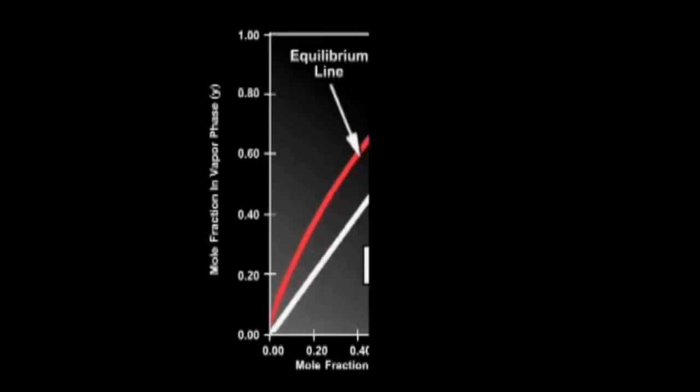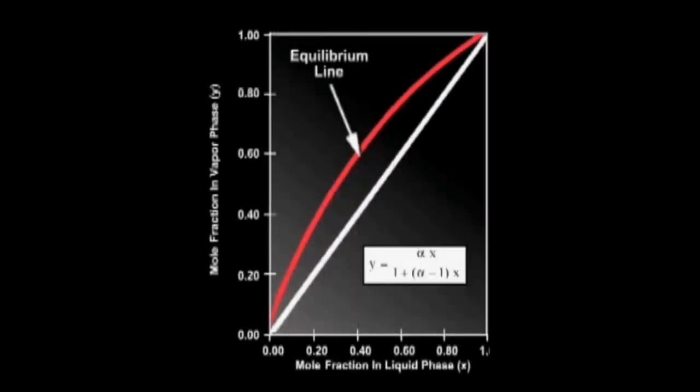We begin solving by plotting the equilibrium curve on the XY plot. This can be done since we know alpha for all values of the mole fraction. It is constant and equal to 2.